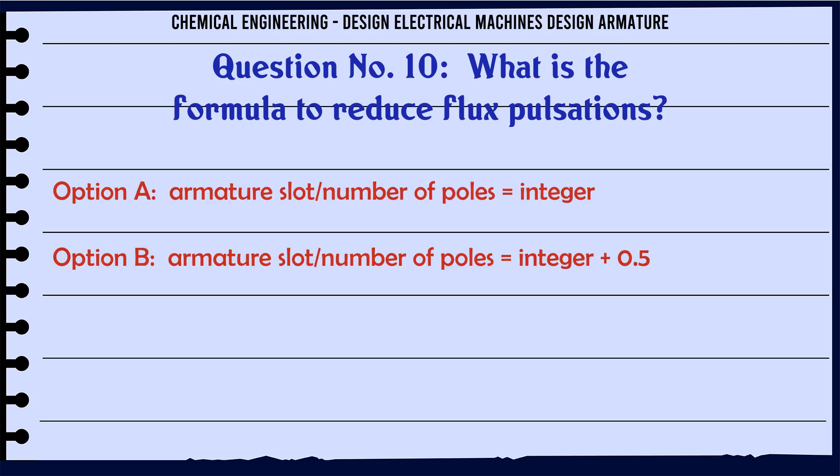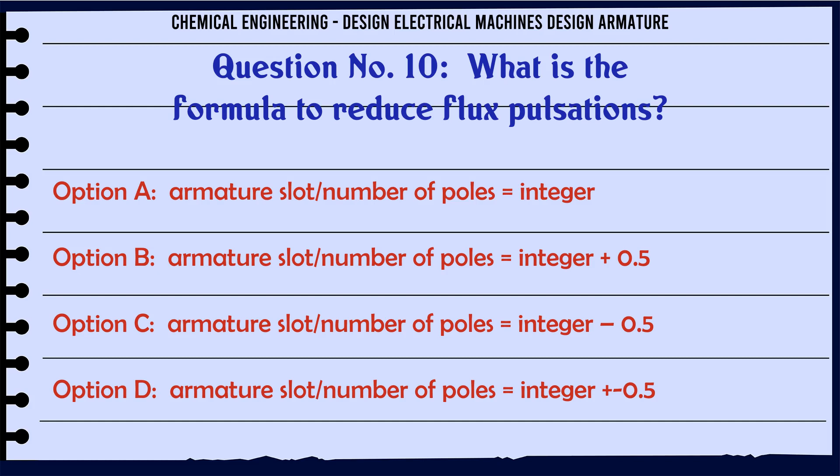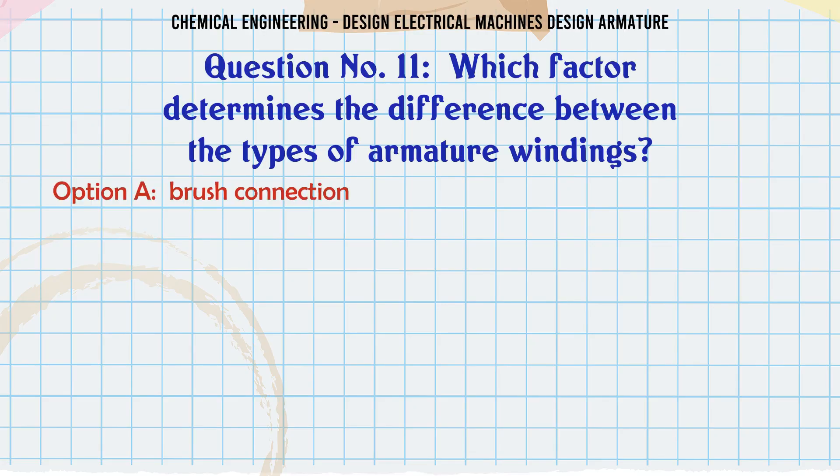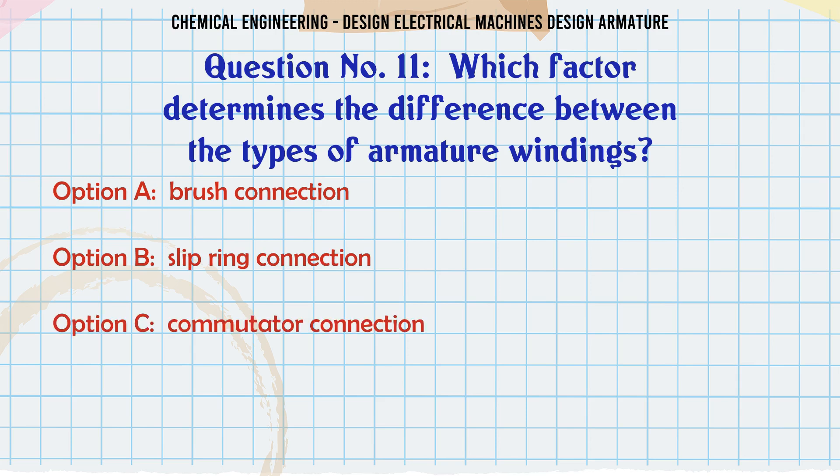What is the formula to reduce flux pulsations? Options: a) Armature slot/number of poles = integer, b) Armature slot/number of poles = integer ± 0.5. The correct answer is Armature slot/number of poles = integer ± 0.5.